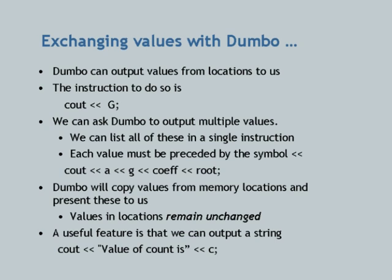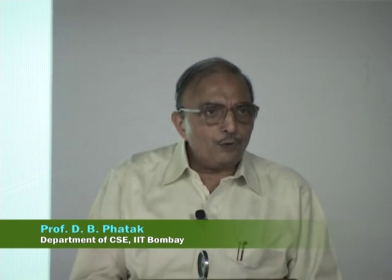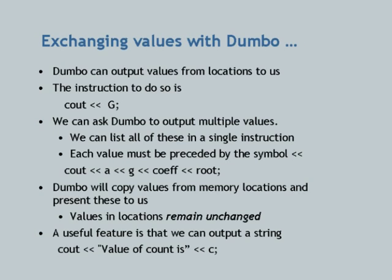Values in locations remain unchanged during output. A useful feature is that we can output a string like 'value of count is', followed by C. This is important because otherwise, in a large program creating a lot of output, we would not know which value corresponds to what. You can also output a constant value — 'cout << 5' outputs the actual value 5. In fact, any expression that evaluates to a value can be outputted.